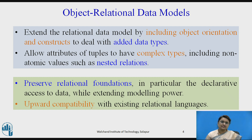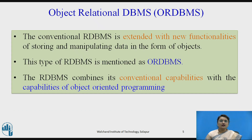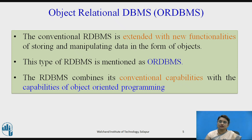Even though it approaches the object-based model, it also preserves the relational foundations — how to declare data and whatever power the normal RDBMS has. We can say it maintains upward compatibility with existing relational languages. We call this ORDBMS — Object-Relational Database Management System — where the conventional RDBMS is extended with functionalities for storing and manipulating data in the form of objects.